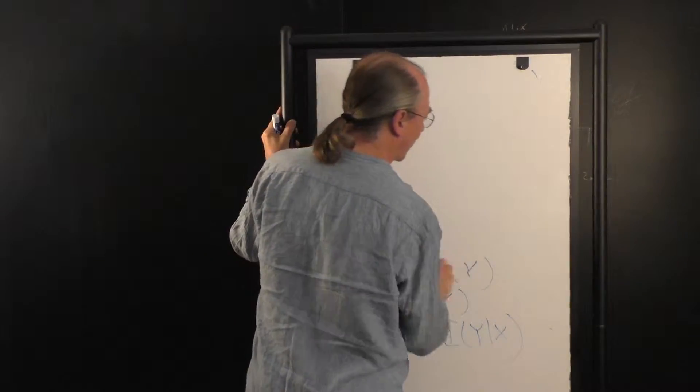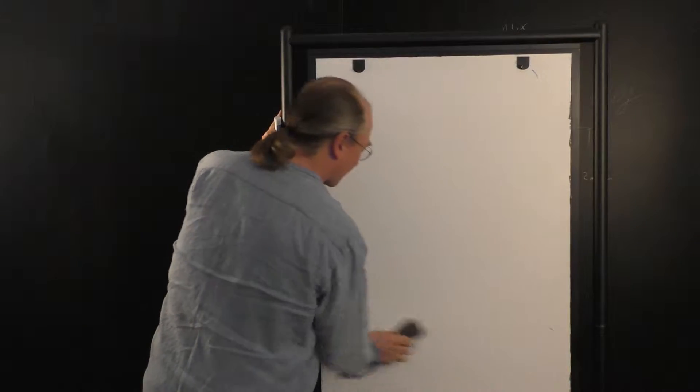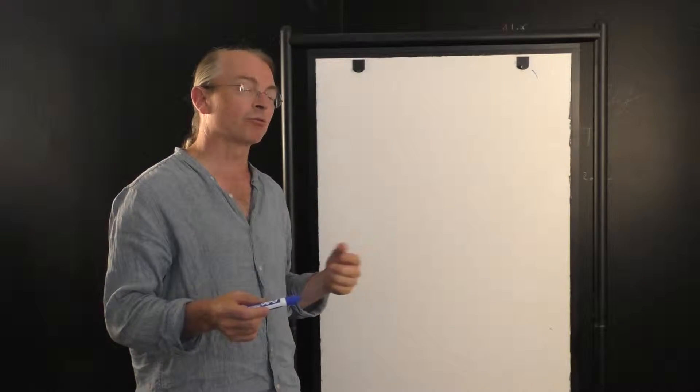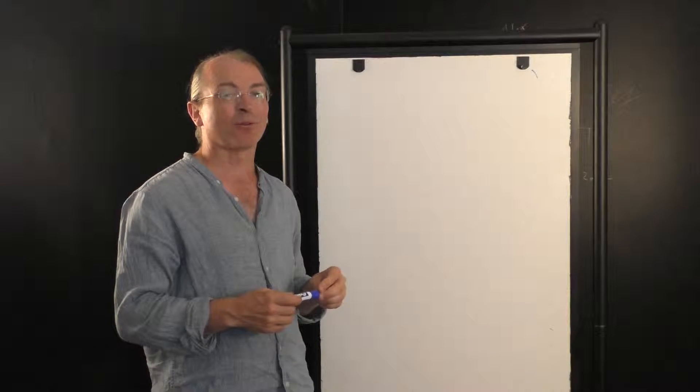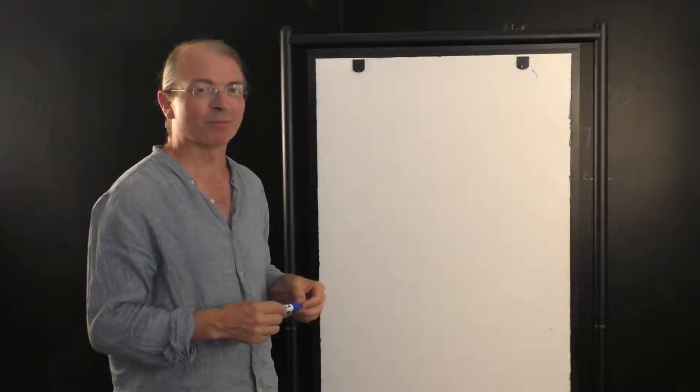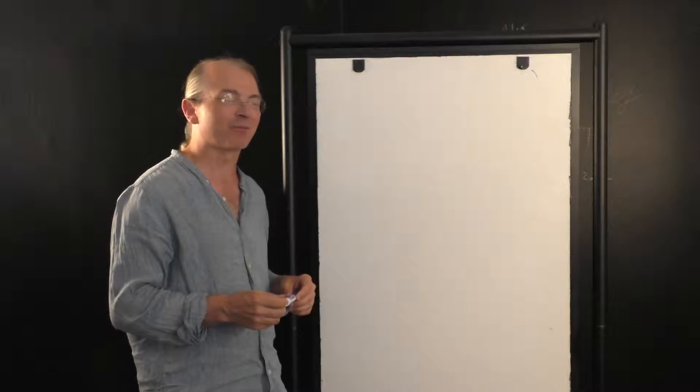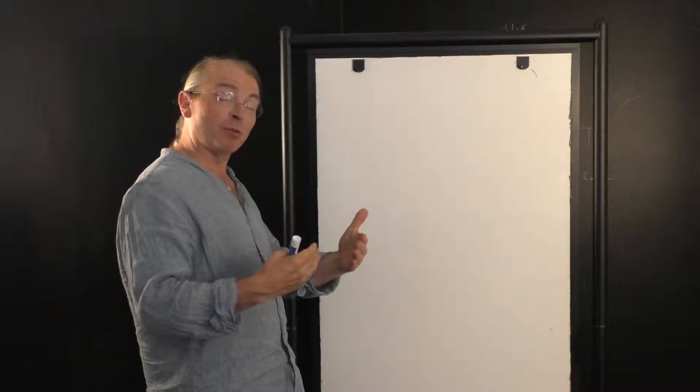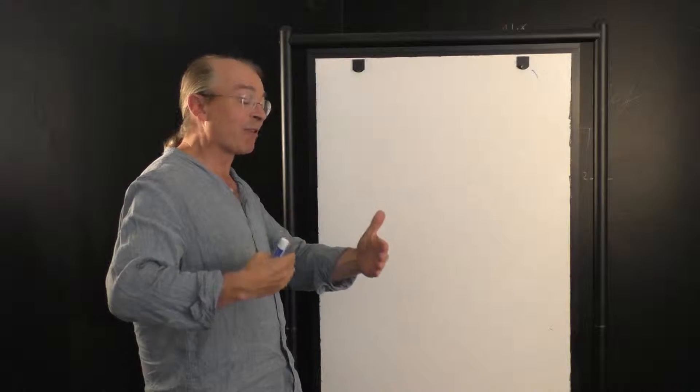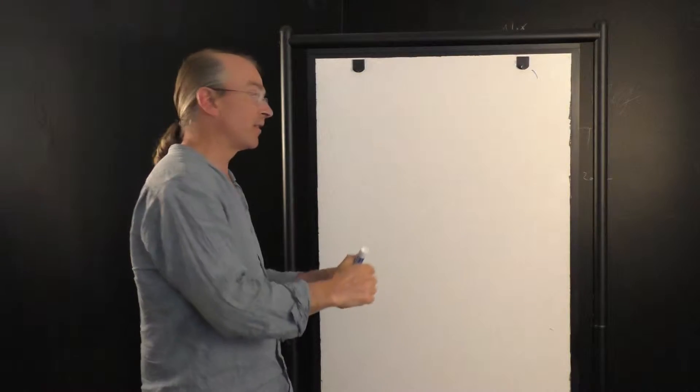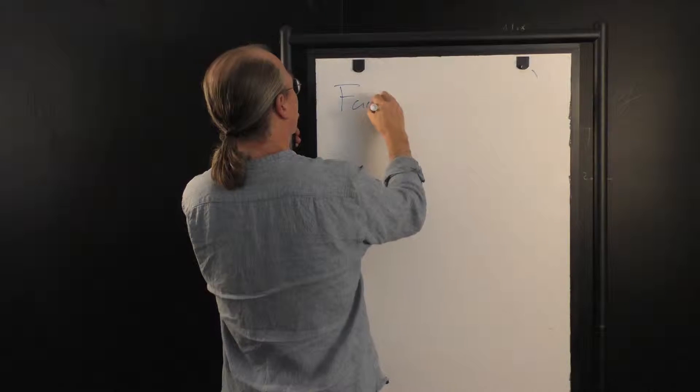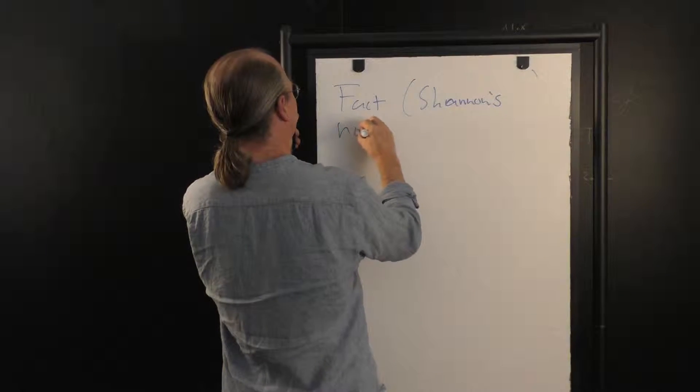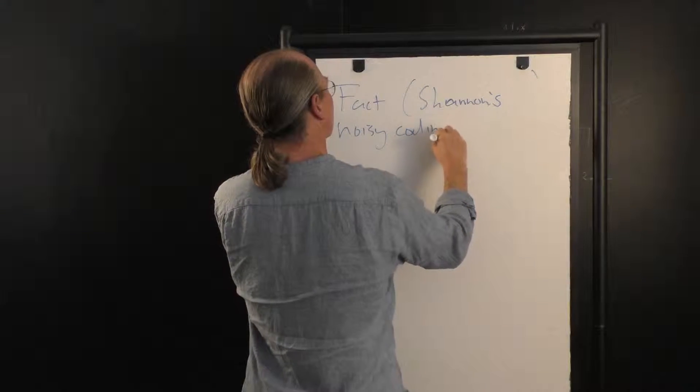So, I'm just going to mention now here a fact, which is really the central fact of information theory and communication theory of the 20th century. It's a central result of Claude Shannon's famous paper, The Mathematical Theory of Communication, which was one of the most amazing pieces of applied math in the last 150 years or so. So, I've been arguing heuristically that this mutual information measures the amount of information that actually goes down the channel.